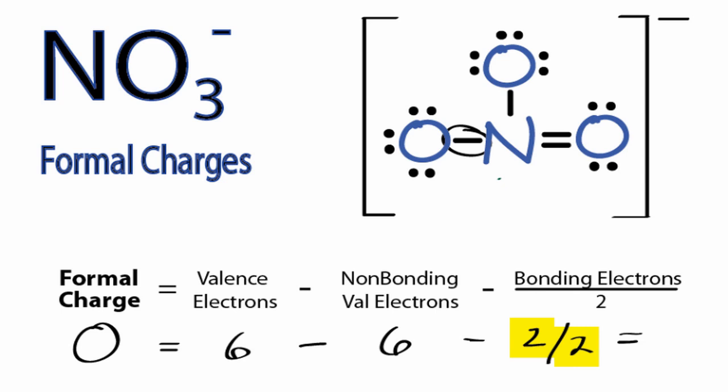6 minus 6 minus 1 gives us a minus 1 formal charge for this oxygen right here. And we said that'll be the same as this oxygen right here.